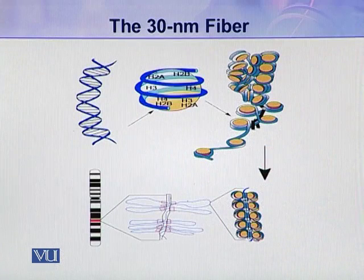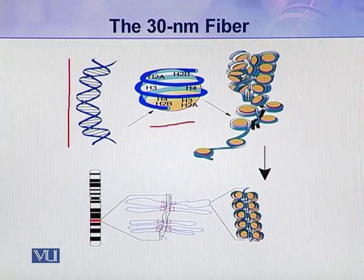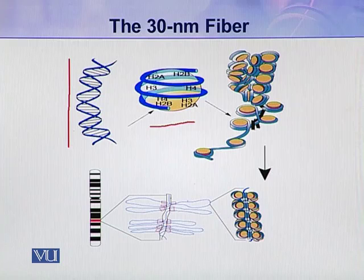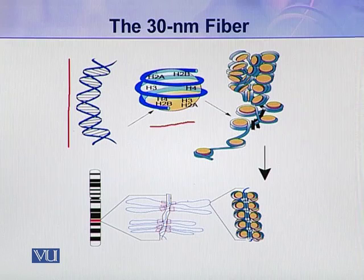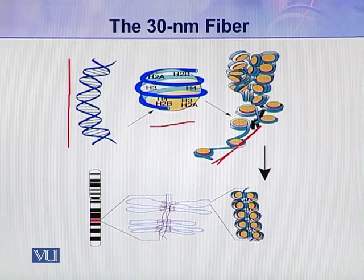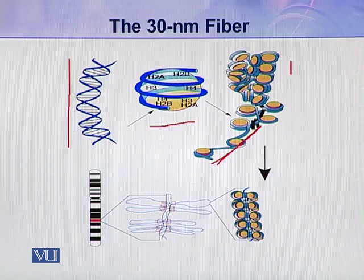Let me summarize the whole condensation process. The first level of folding is the formation of nucleosomes, where the DNA molecule wraps around the histone molecules, forming a fiber called the 10 nanometer fiber, which resembles beads on a string. The next level of organization is achieved when this 10 nanometer fiber forms the 30 nanometer fiber.